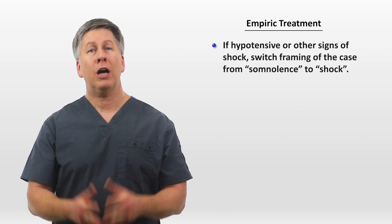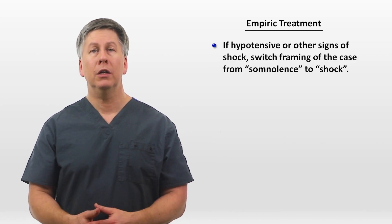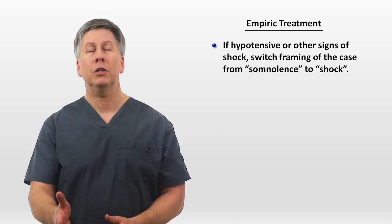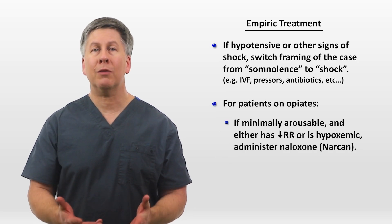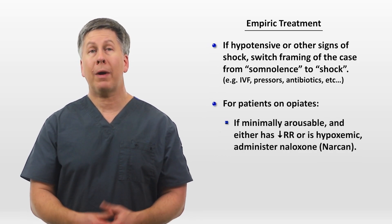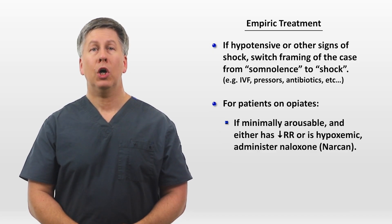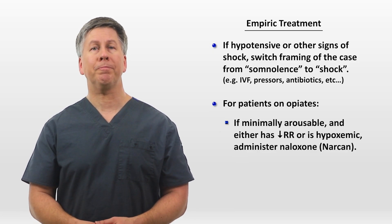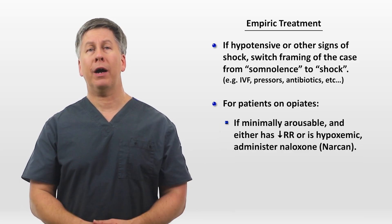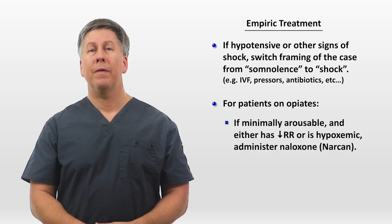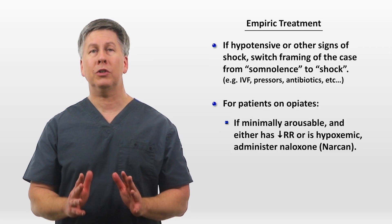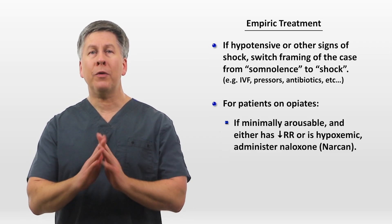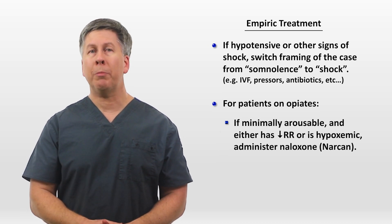There is not much empiric treatment to consider for the somnolent patient. If they are hypotensive or there are other signs of shock, switch framing of the case altogether from somnolence to shock and treat accordingly with fluids and/or pressors. If the patient is minimally arousable and either on a low respiratory rate or hypoxemic, administer Narcan. On the other hand, if the patient is just a little sleepy but arousable and there is no respiratory compromise, think twice about giving Narcan. The abrupt reversal of opiates in a patient with severe pain or with opiate dependence can be an extremely unpleasant experience. Irrespective of whether or not you give Narcan, the patient needs to be very closely monitored afterwards.